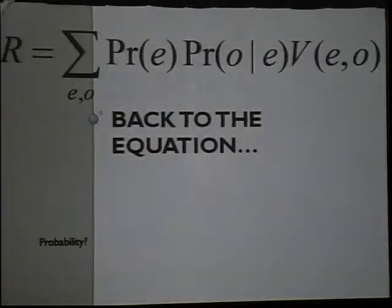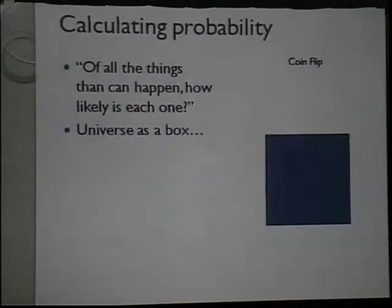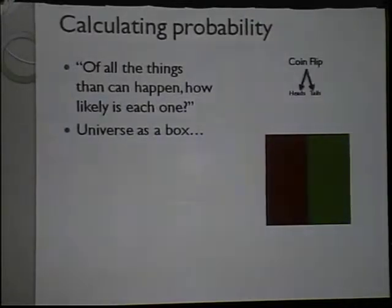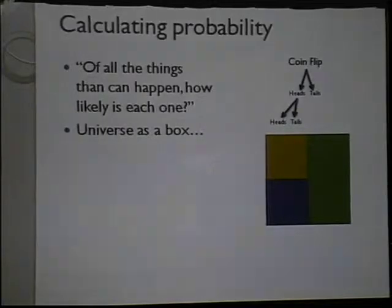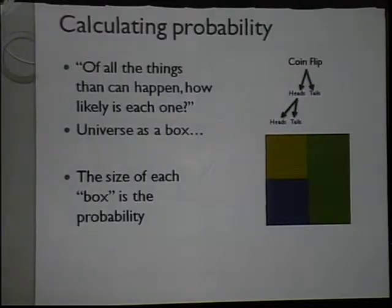What is probability? It's best described as: of all the things that can happen, how likely is each one? Think of the universe as a big two-dimensional blue box. If we flip a coin, it can come up heads or tails — only two things can happen — so our universe gets divided in two. If you think of this as a dartboard, it's easier to hit tails than heads-and-heads. The size of each box represents its relative probability.